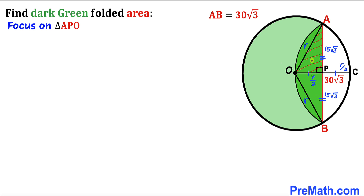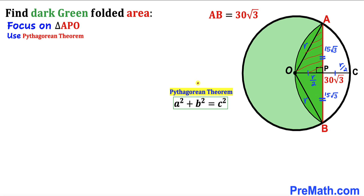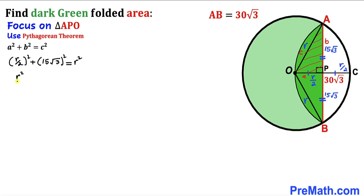Now let's focus on right triangle APO, whose side lengths are r, r/2, and 15√3. Applying the Pythagorean theorem — a² + b² = c², where c is the hypotenuse (r) — we get: (r/2)² + (15√3)² = r². Simplifying gives r²/4 + 675 = r².